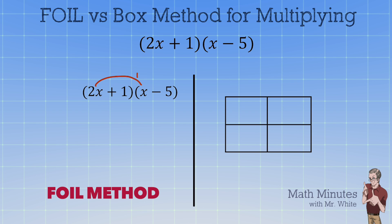We take these two first terms, that's the F in FOIL, and we multiply them and we get 2x². Then we do the outside, the 2x times the -5. We multiply them and we get -10x.